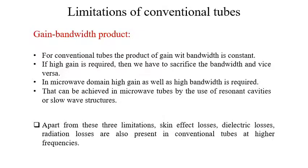Next is the gain-bandwidth product limitation. For conventional tubes, the product of gain with bandwidth is constant. If high gain is required, we have to sacrifice bandwidth and vice versa. In the microwave domain, high gain as well as high bandwidth is required, and that can be achieved in microwave tubes by the use of resonant cavities or slow-wave structures. Apart from these three basic limitations, other limitations include skin effect losses, dielectric losses, and radiation losses present in conventional tubes at higher frequencies. At lower frequencies, these effects are extremely small, but at higher frequencies they predominate and conventional tubes become practically unusable.